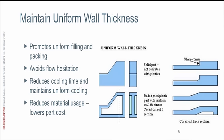Taking a closer look at uniform wall thickness — number one rule: maintain uniform wall thickness. Why? It promotes uniform filling and packing. When we talk about filling, I'm talking about the profile of the melted plastic as it flows through the part cavity. The more uniform that is, the more likely you are to get a part with uniform molded part properties. It also promotes uniform pressure distribution and uniform temperature distribution. Basically, anything you can do to achieve uniformity will maximize the quality of your part.